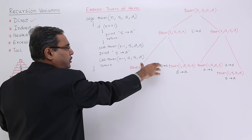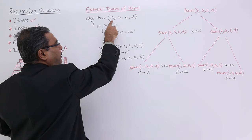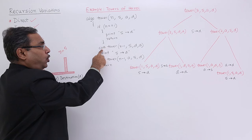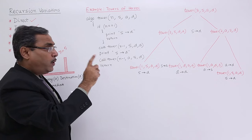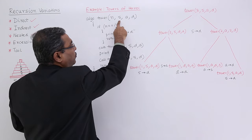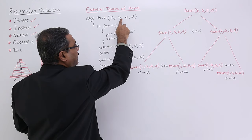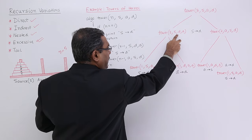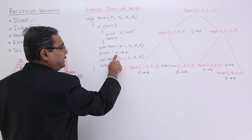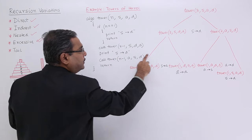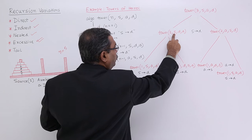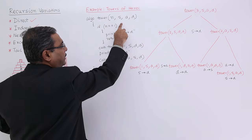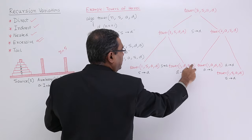When tower(2, S, D, A) is called, 2 is not equal to 1, so we go further. We call tower(1, S, A, D) — n-1 is 1. The second argument stays as the source, the third and fourth arguments follow the pattern. Then we print the move from the second to the fourth argument, which is S to D. Then we call tower(1, A, S, D), using the third, second, and fourth arguments accordingly.